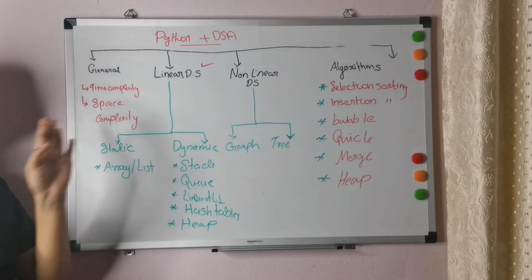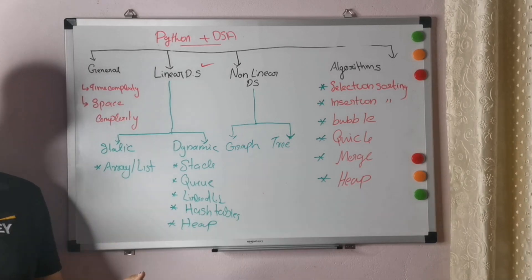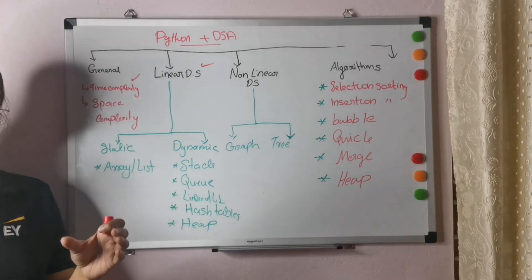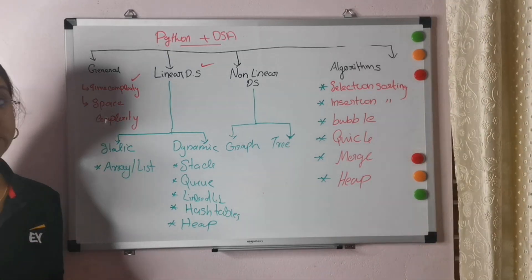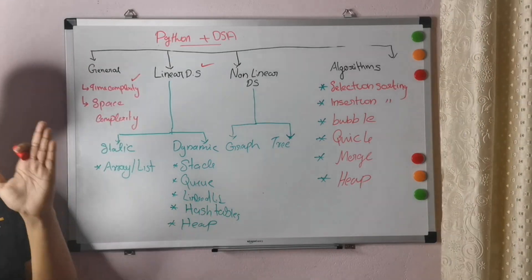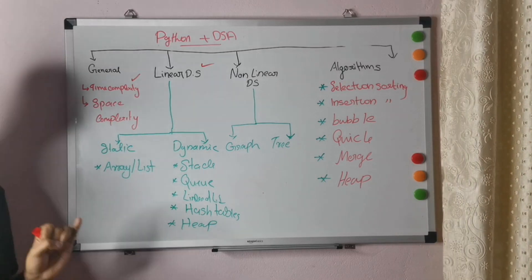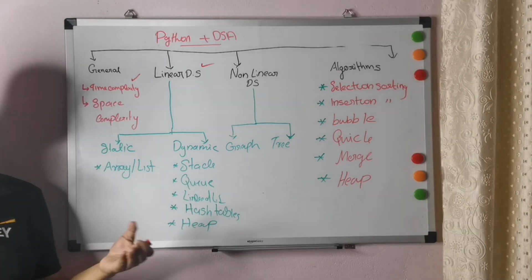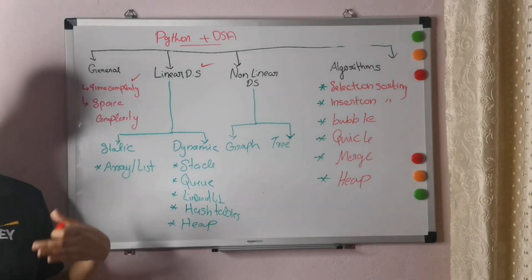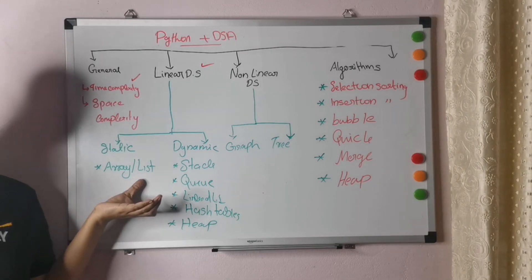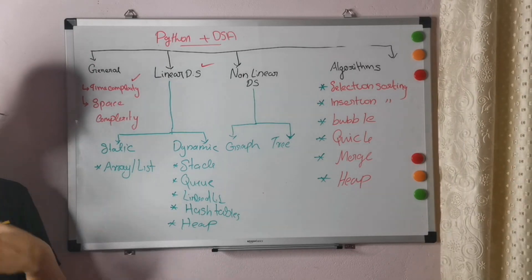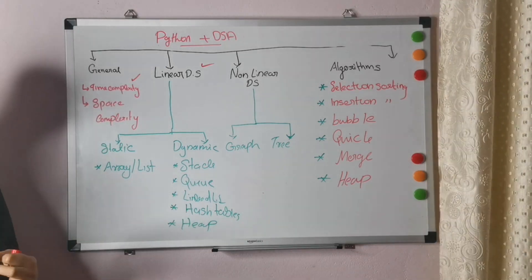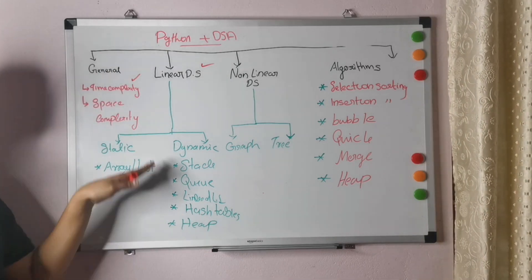I have divided Python plus data structures into four categories. The first is General — meaning complexity: how much time is taken for the execution of a program and how much space is needed. The second is Linear Data Structures, which contains Static and Dynamic. Static means arrays — for example in C, where we define the size and it is not extendable. Dynamic includes stack, queue, linked list, doubly linked list, circular linked list, and hash table.